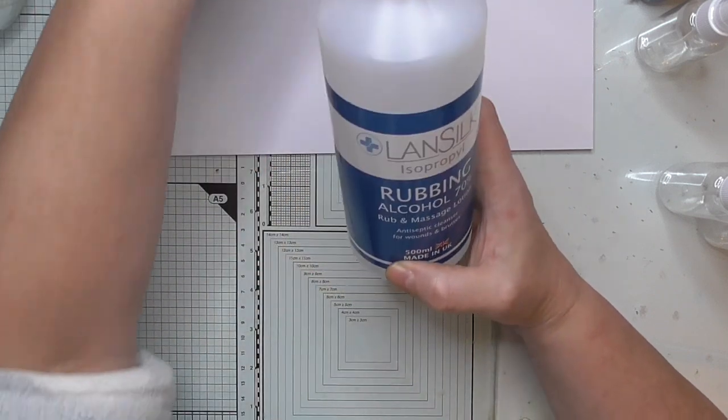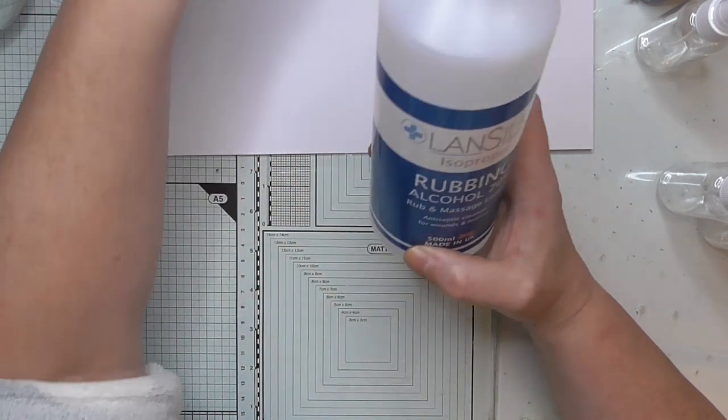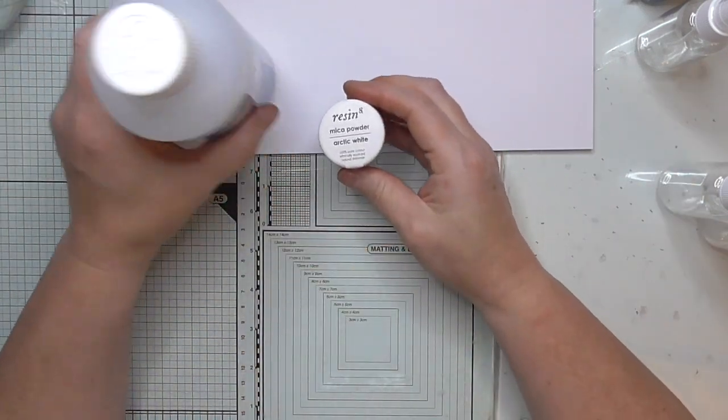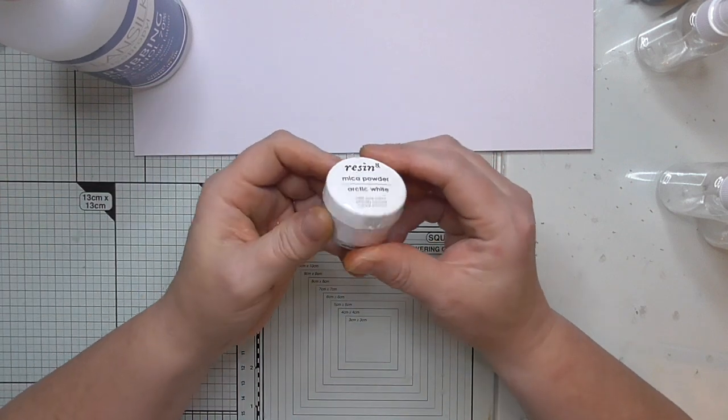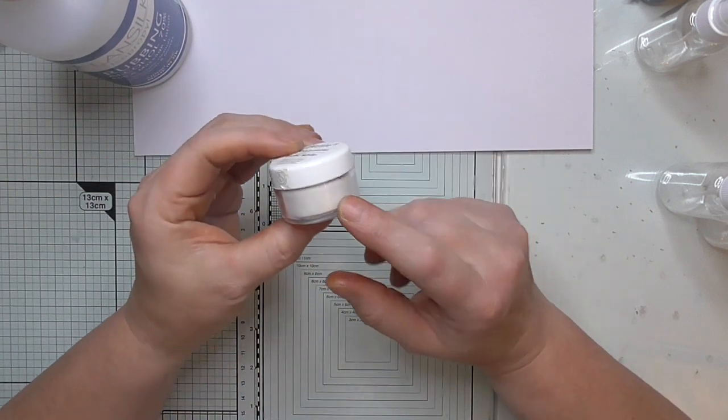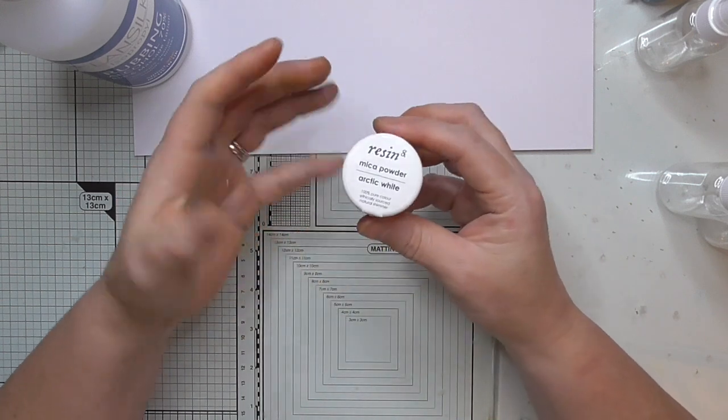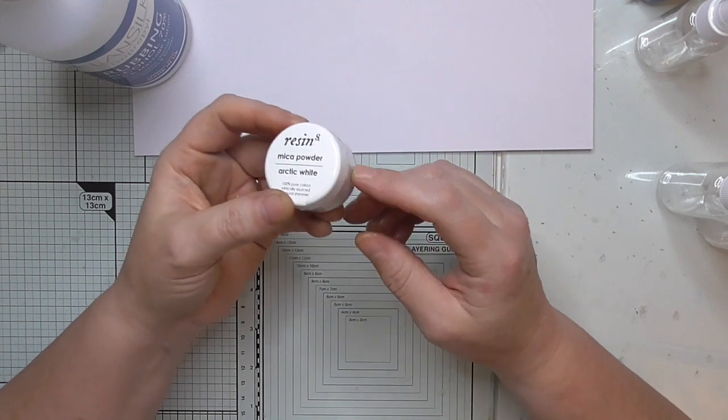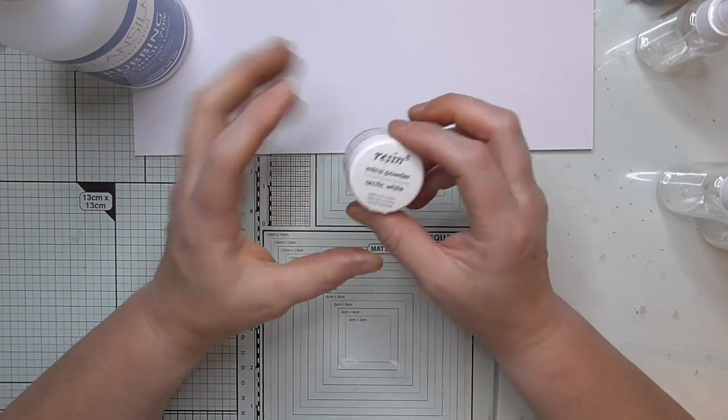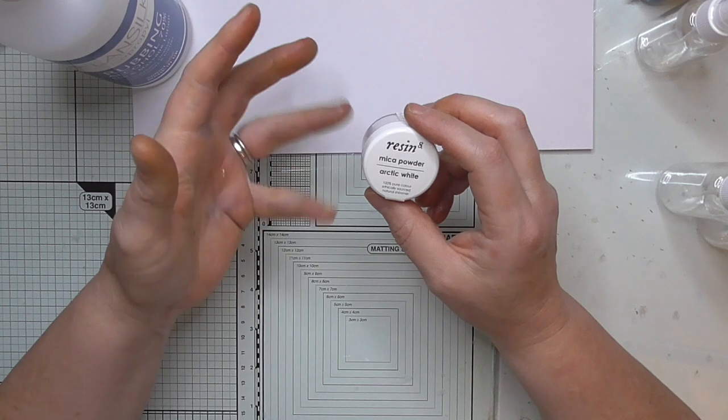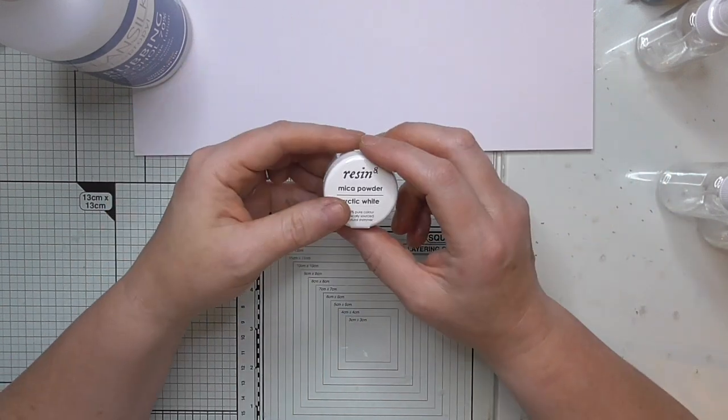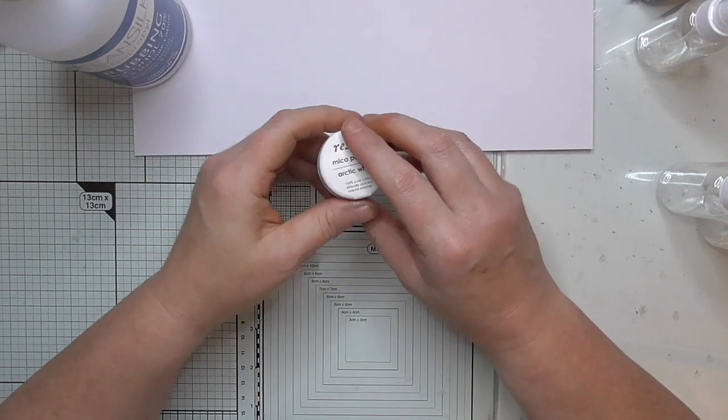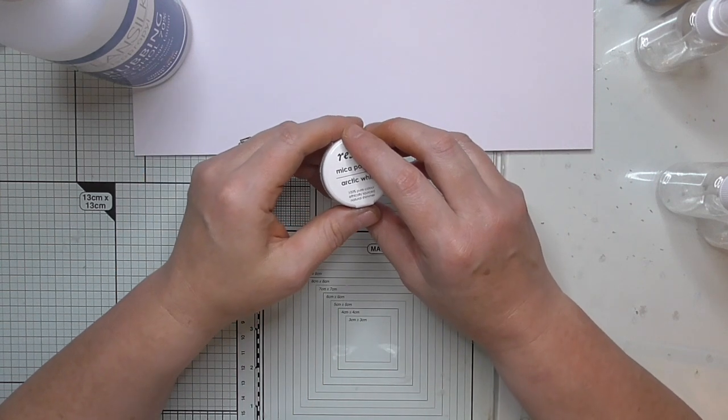Then I bought some mica powder. This is just pearlescent, it's not colored, so you just add it to any color and you'll get the pearly color. The only other thing I might invest in is a gold one to make a gold spray. This was about five pounds.